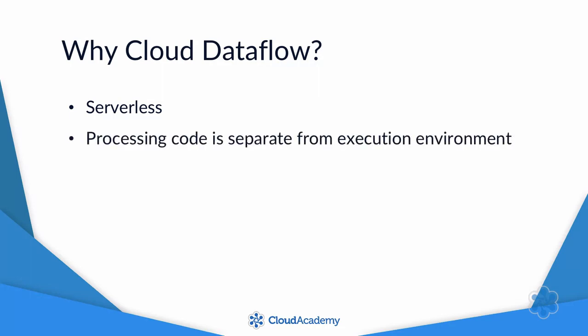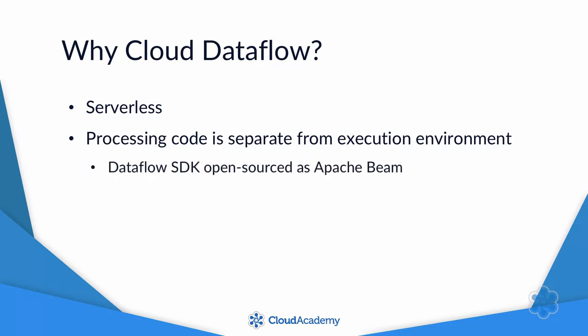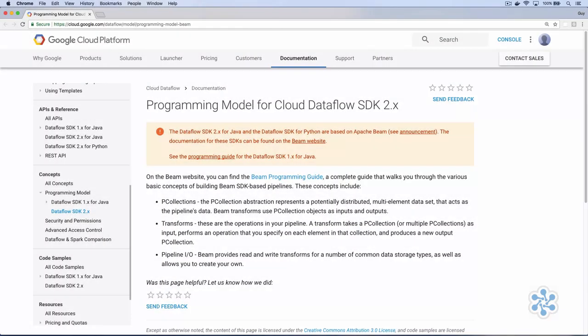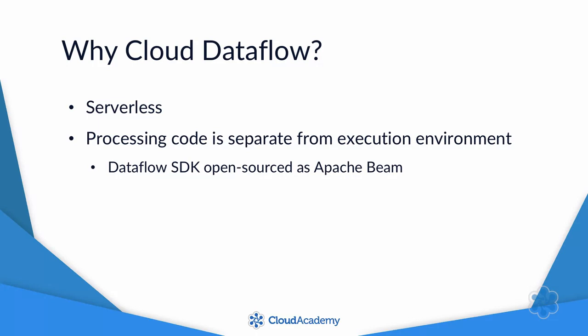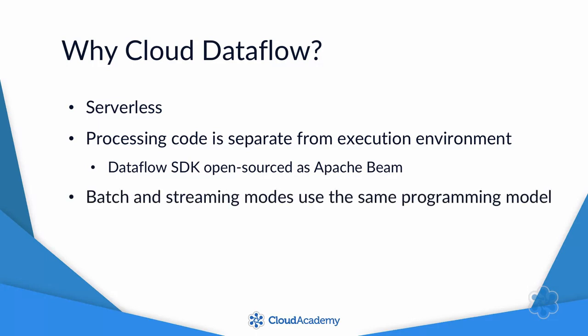Second, Google has separated the processing code from the environment where it runs. In 2016, the open-source Dataflow software development kit was released as Apache Beam. Now you can write Beam programs and run them on your own systems or on the Cloud Dataflow service. In fact, if you look at Google's Dataflow documentation, you'll see that it tells you to go to the Apache Beam website for the latest version of the SDK. Third, it was designed to process data in both batch and streaming modes with the same programming model. This is a big deal — other big data SDKs typically require that you use different code depending on whether the data comes in batch or streaming form. Competitors like Spark are addressing this, but they're not quite there yet.